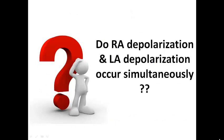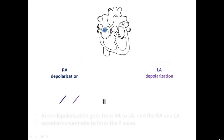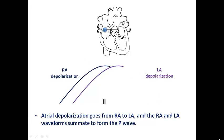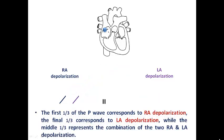We need to ask ourselves about normal atrial depolarization: do right atrial and left atrial depolarization occur simultaneously or not? Atrial depolarization starts from the SA node, which is present in the sub-epicardial layer in the right atrium, and travels to the left atrium through Bachmann's bundle, and through the internodal tracts to the AV node. So atrial depolarization will depolarize the right atrium before the left atrium. If we divide the P wave into three thirds, the first third corresponds to right atrial depolarization, the final third to left atrial depolarization, and the middle third represents a combination of both.